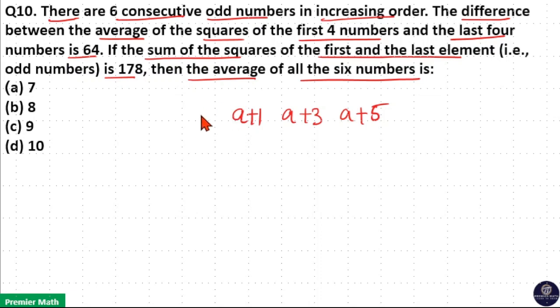Next left side number will be a-1, and next left side number a-3, and next left side number a-5. Now you can see a-5, a-3, a-1, a+1, a+3, a+5 are six consecutive odd numbers.